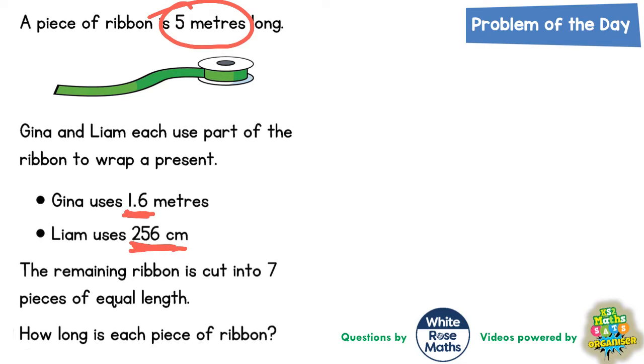Now the first thing that should ring an alarm bell in your head is that we've got different units here. We've got this in metres, this in metres, this in centimetres. What we want is all the measurements in the same unit. We could turn them all into metres, so 5 would stay the same, 1.6 would stay the same, and 256 would become 2.56 metres.